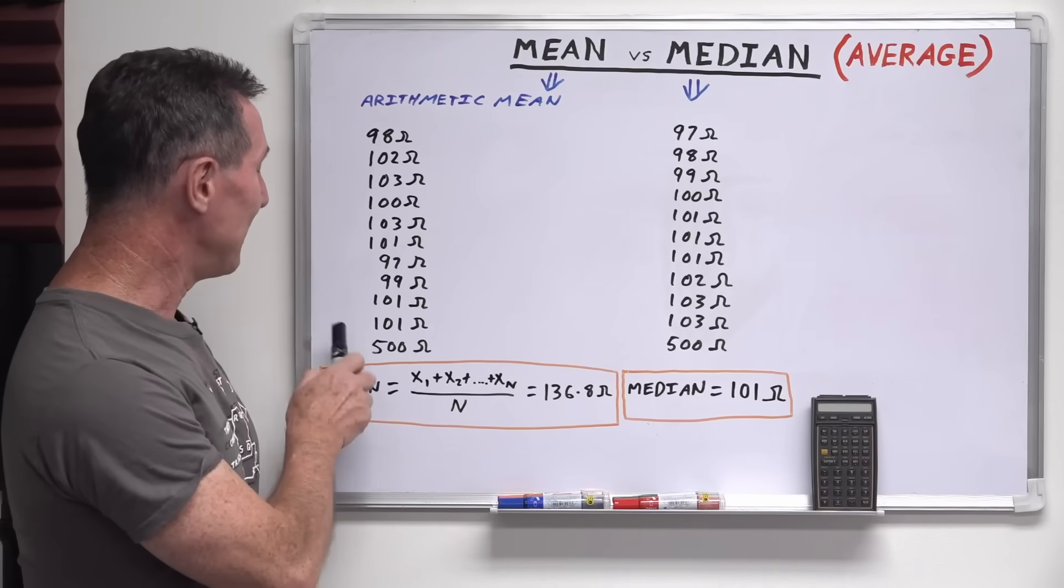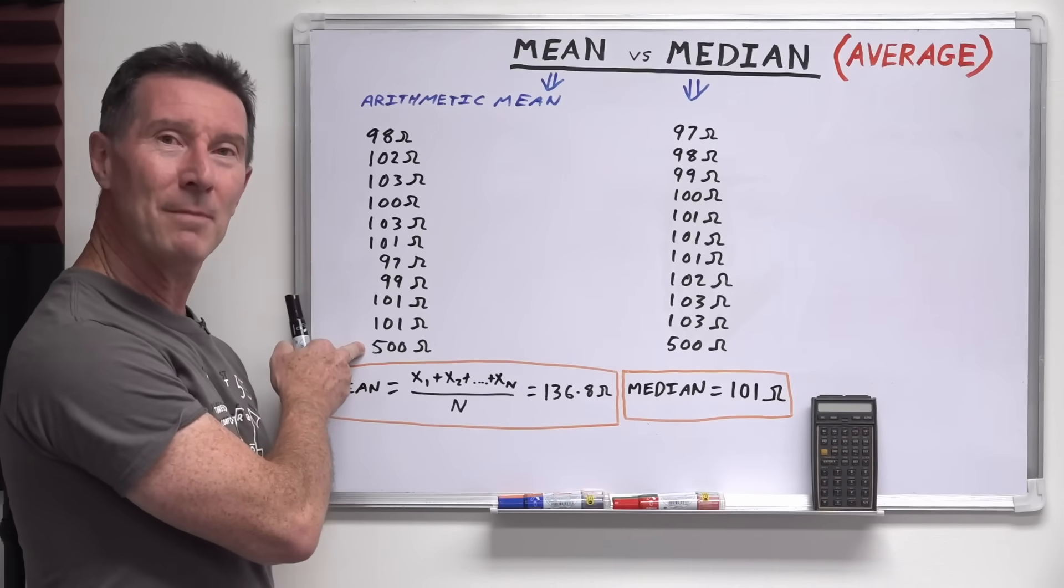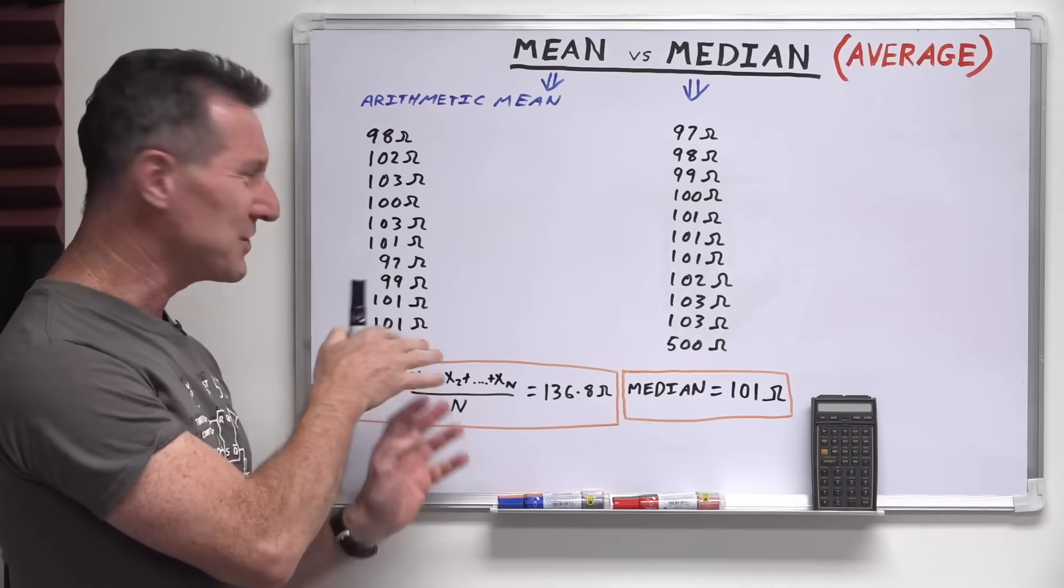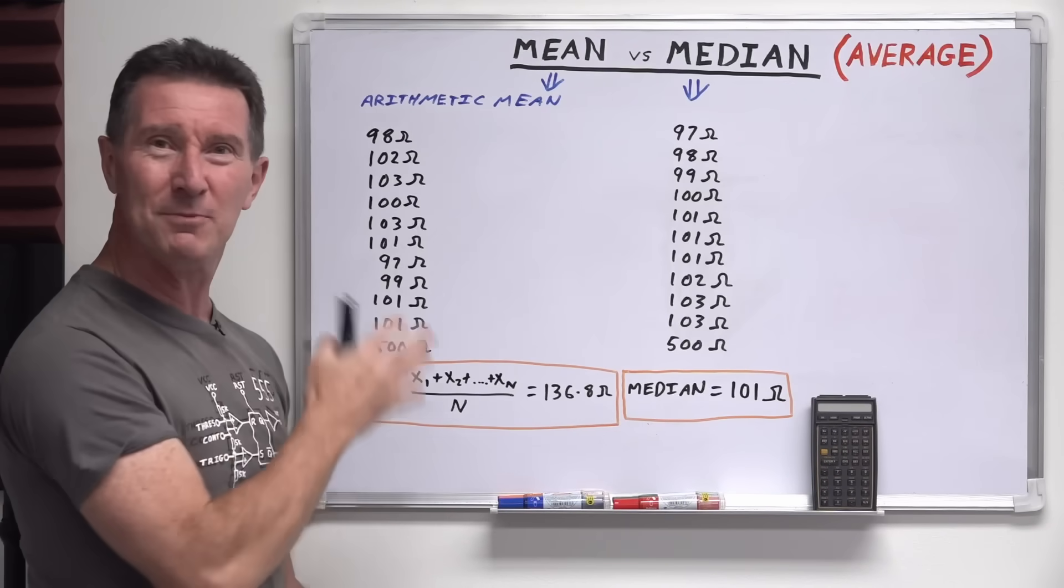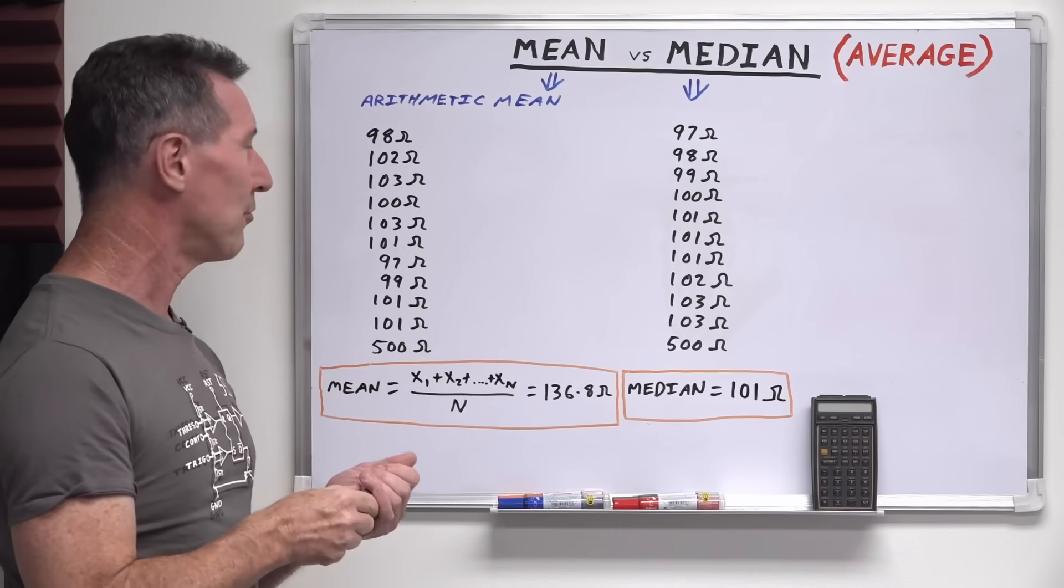In this particular case it's obvious that something's gone wrong in my measurement here. Could be the contact resistance or whatever it is. Doesn't matter. 500 ohms doesn't sound right when all the others are supposed to be near enough to 100 ohms.